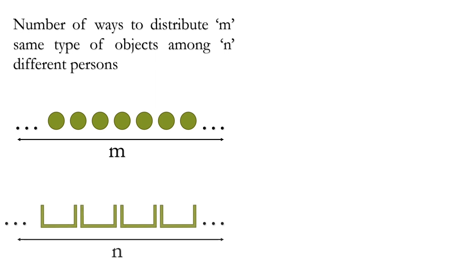The first thing that we need to solve this question is to find the number of ways to distribute m same type of objects among n different persons. Suppose these are m same type of objects and these are n different persons. Now first we will extract a tricky result from it.